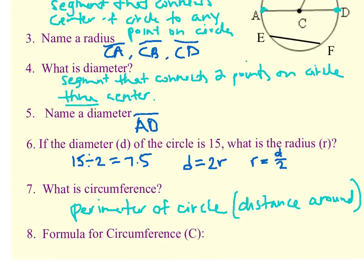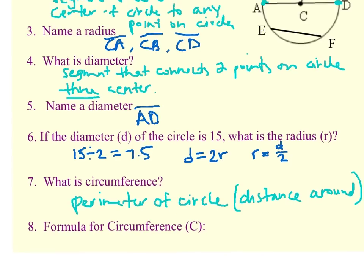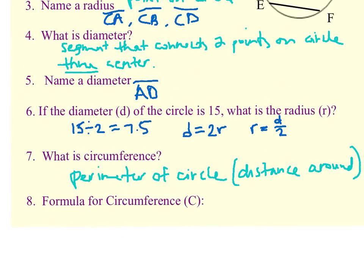The formula for circumference has to do with radius or diameter. There are actually two formulas you can use. Capital C is what we use for circumference, and you can either do pi times diameter, or two times pi times radius. It's all dependent upon what you know. If you know diameter, you can always figure out radius, and if you know radius, you can always figure out diameter. So whether you use one formula or the other, you should be able to figure out circumference whether you're given radius or diameter.